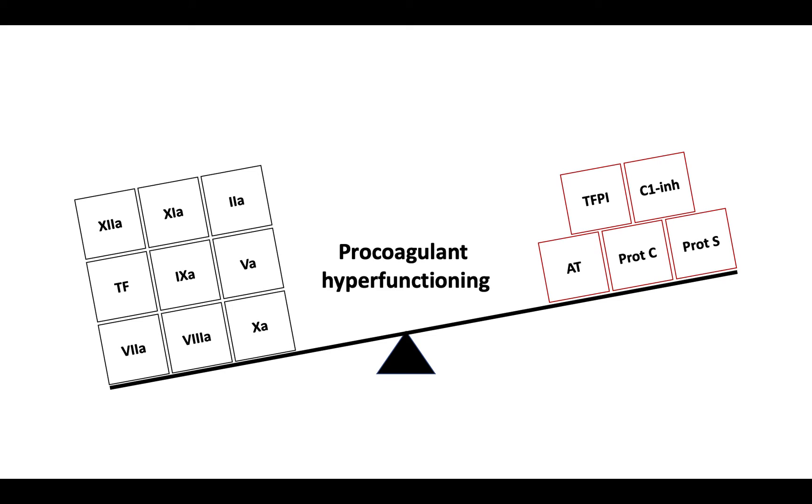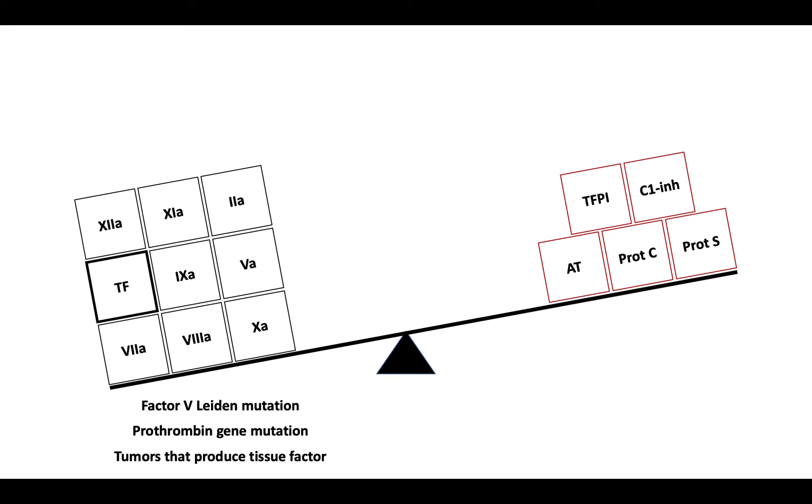This can occur due to procoagulant hyperfunctioning, as can be seen with the factor V Leiden mutation, the prothrombin gene mutation, or with malignant tumors that produce procoagulant factors such as tissue factor.